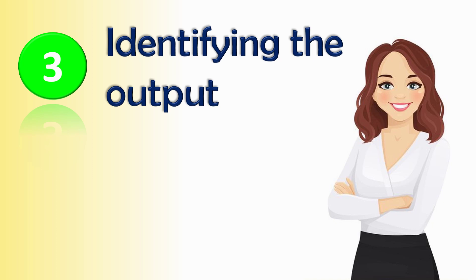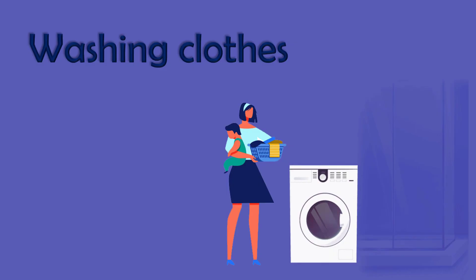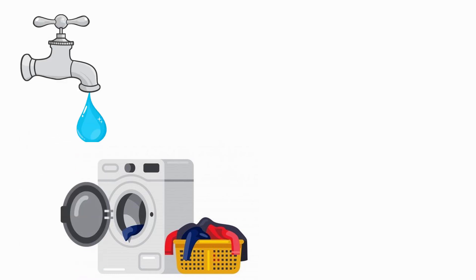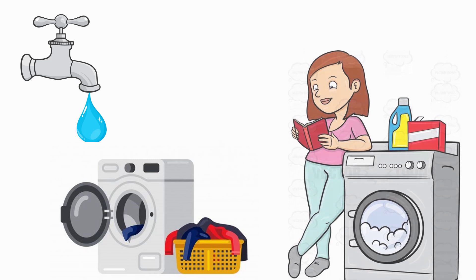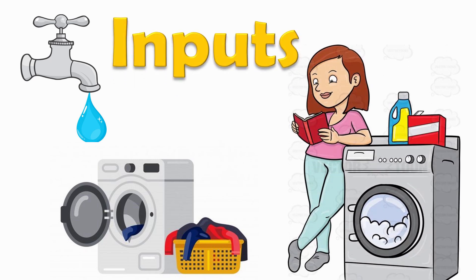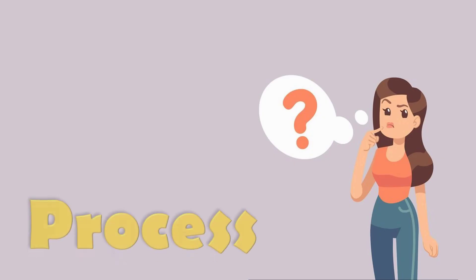Let's discuss an example. Say you need to wash your clothes. In this problem we should find out the input, process, and output accordingly. The main things you need to wash your clothes will be the input — for example, your clothes, washing powder, water, and a washing machine or a wash basin.